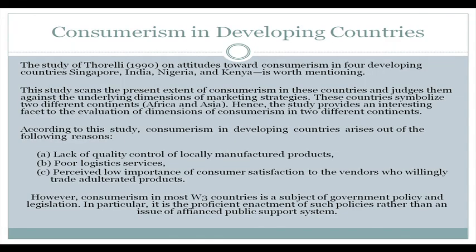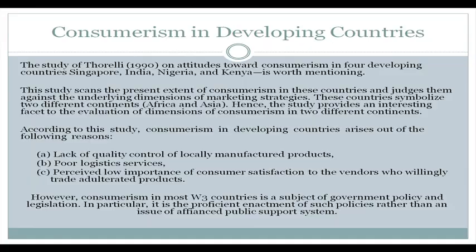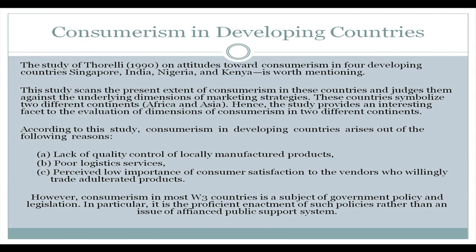Therefore, consumerism in most W2 and W3 countries is precisely subject to government policy and legislation, where government has to actively control these things. There are counterfeit and adulterated products in local markets — hawkers selling products that look like Scotch Brite for rupees 10, but which are actually counterfeit products. Customers are deceived because they may not be aware of proper packaging and may feel the product is similar quality, requiring legislative and policy intervention from the government.